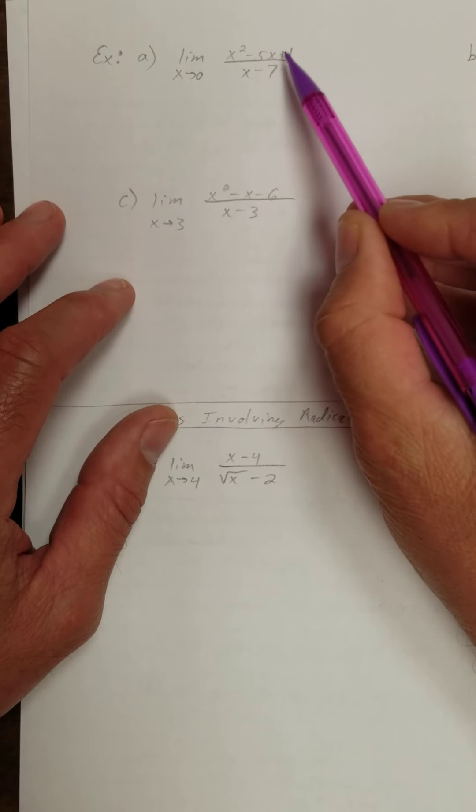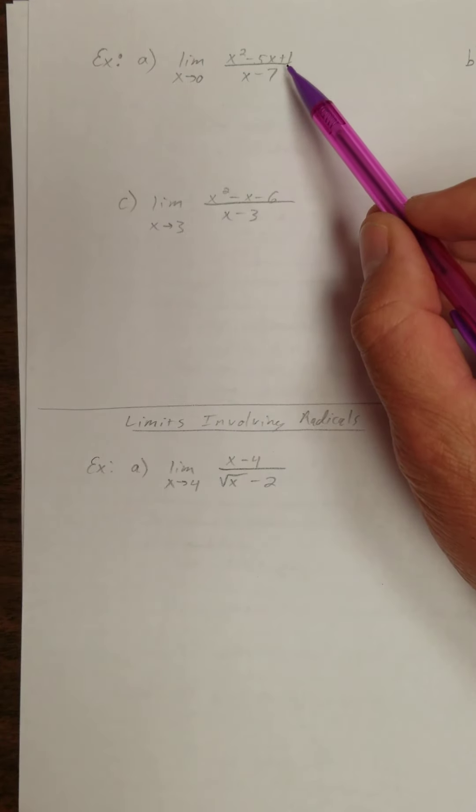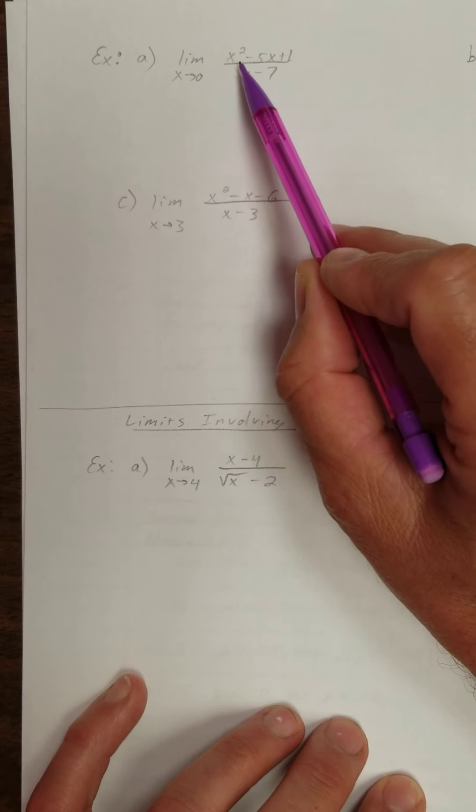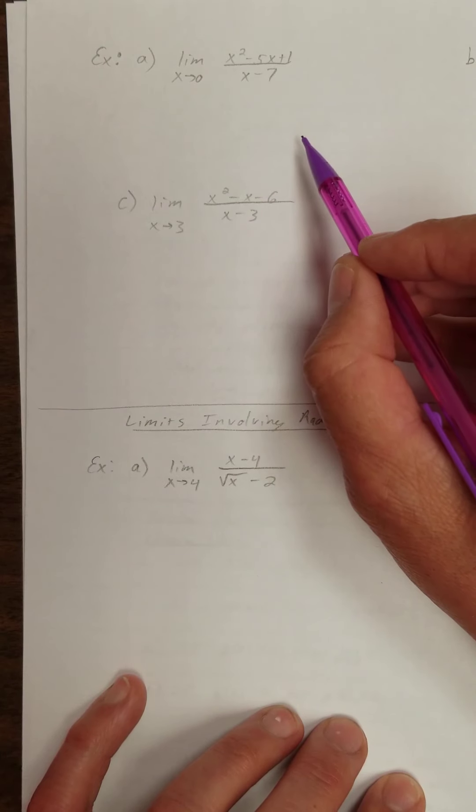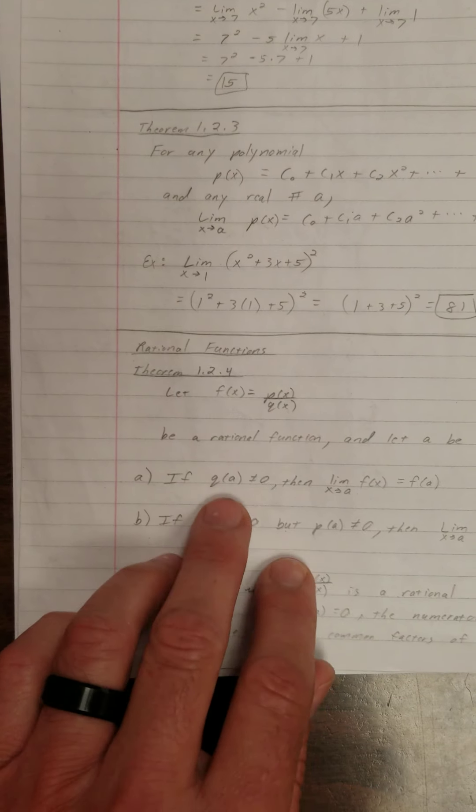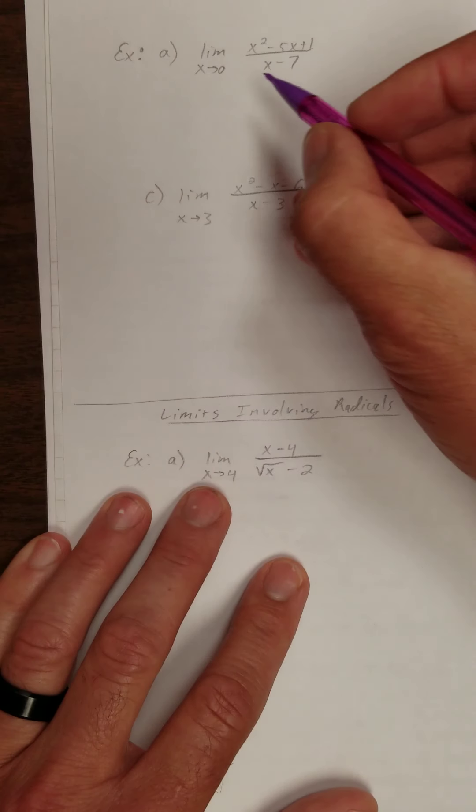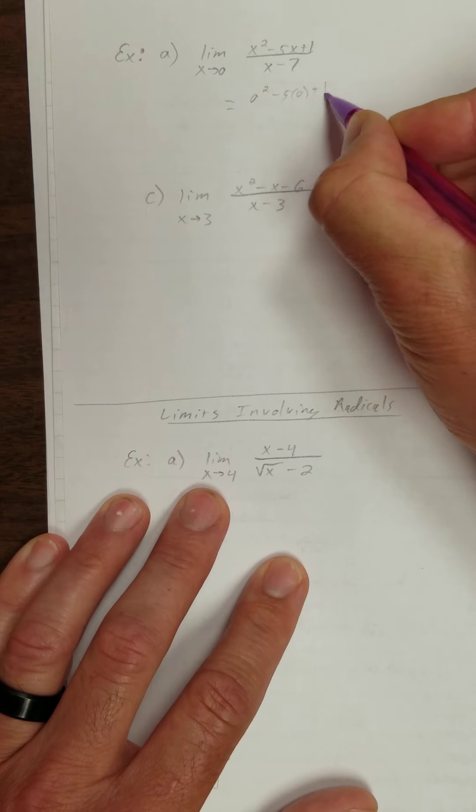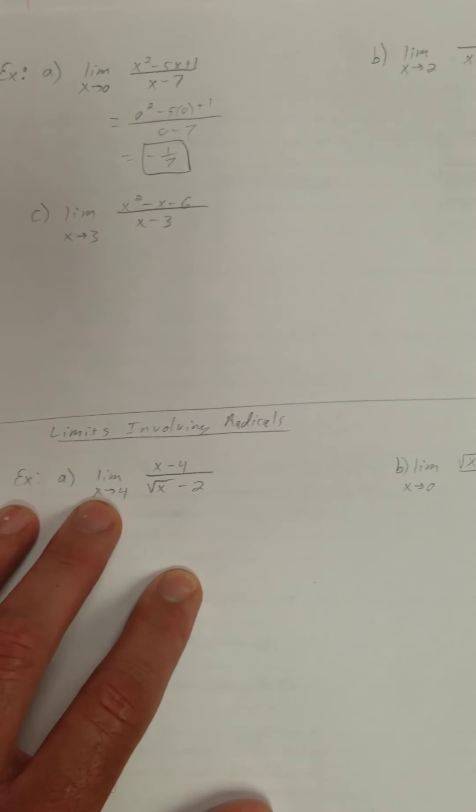Well, it's a rational function, right? Polynomial over polynomial. So what I need to do is I need to think, what happens if I were to evaluate this at 0? I'll have 1 over negative 7. Well, my bottom's not equal to 0. So that's like condition 1. It says if my denominator's not equal to 0, then just evaluate it there. So I'm just going to evaluate this function at 0. 0 squared minus 5 times 0 plus 1 over 0 minus 7, and that's negative 1 7th. That one was easy enough.